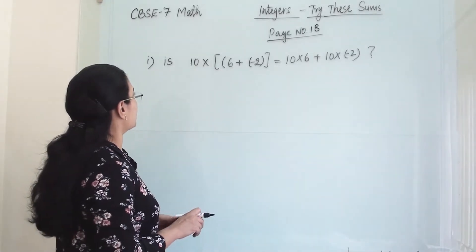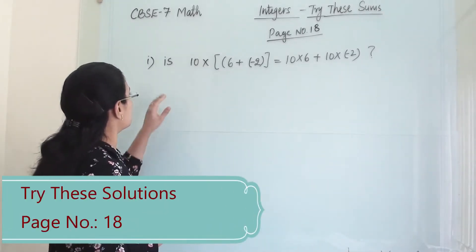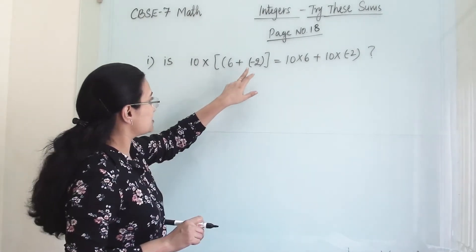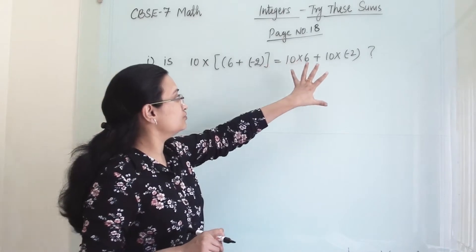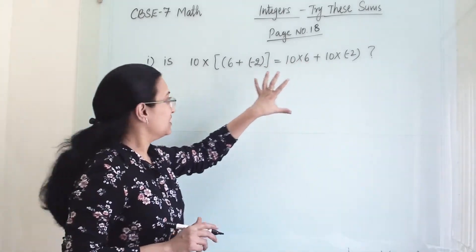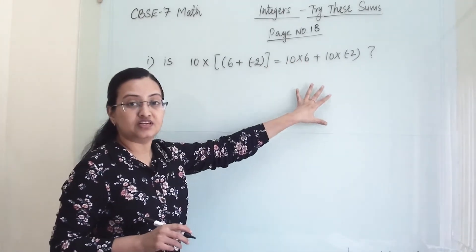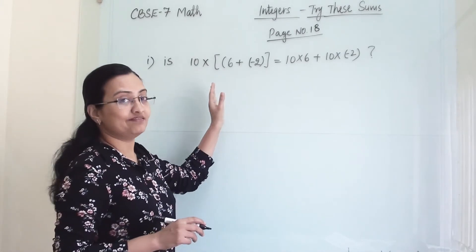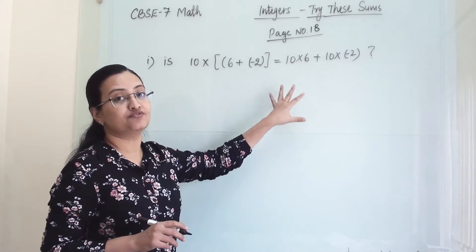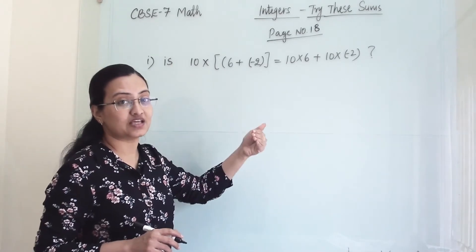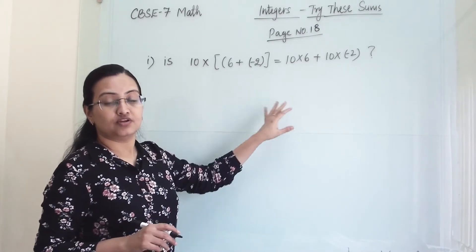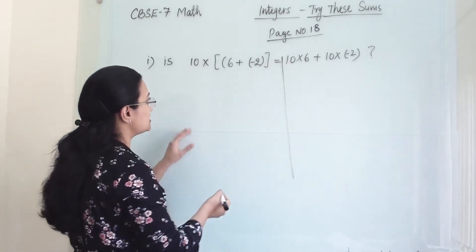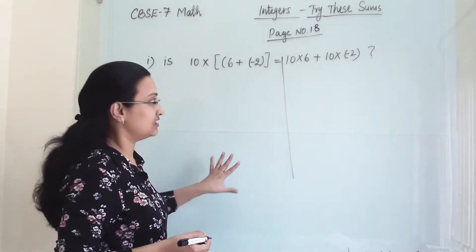So here the first question is: 10 into bracket 6 plus minus 2 is equal to this group of numbers. Two different groups of numbers but numbers are same and we have expanded it differently. We have to check whether these two sets of numbers will give us the same answer or not. We will solve both sides and get the answer.